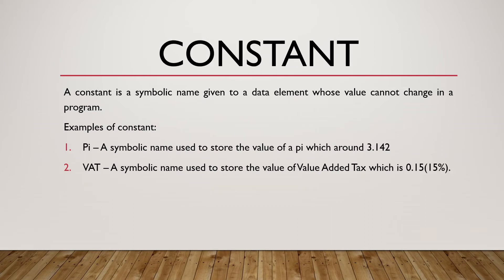The second thing that we can make use of in pseudocode is a constant. A constant is a symbolic name given to a data element whose value cannot change in a program. An example of a constant is pi, a symbolic name used to store the value of pi, which is around 3.142.